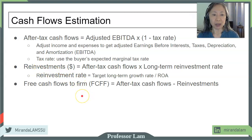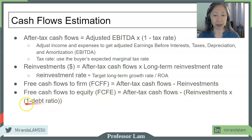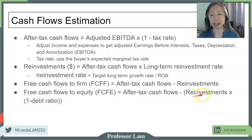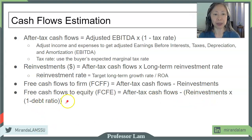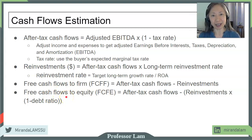We can also estimate free cash flow just to equity holders. In that case, the reinvestment can be reduced by the amount of financing the new equity holder may use: reinvestment times one minus the debt ratio. Be careful — when using cash flow to the firm, use a discount rate for the firm (WACC); if using free cash flow to equity, use a discount rate for just the equity holders (cost of equity).